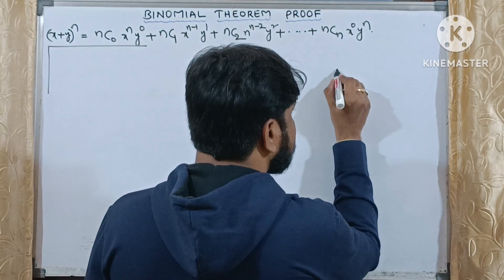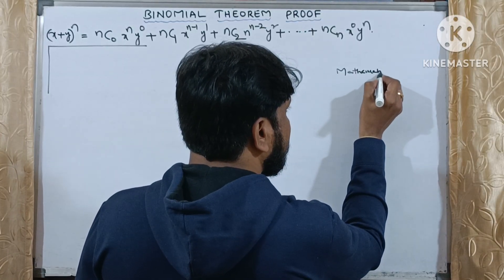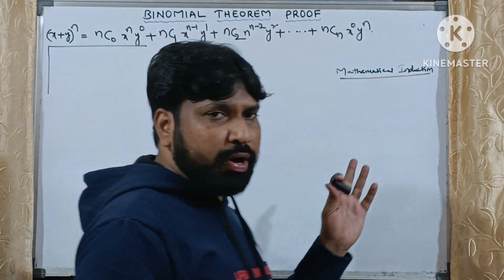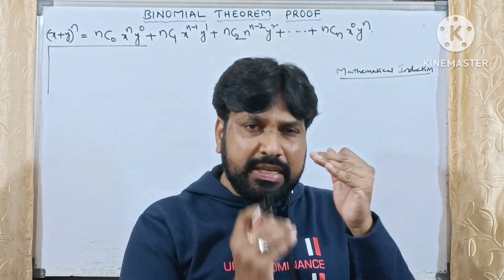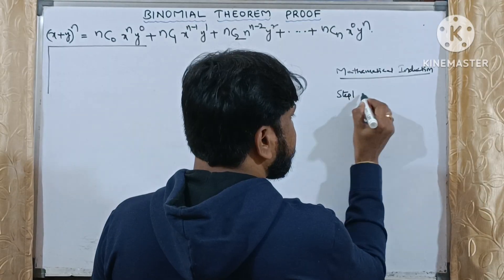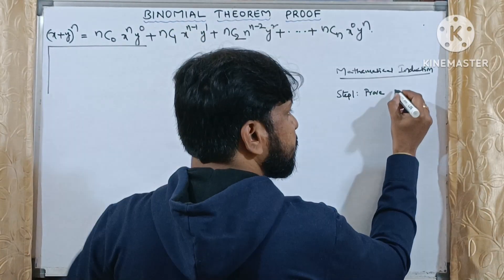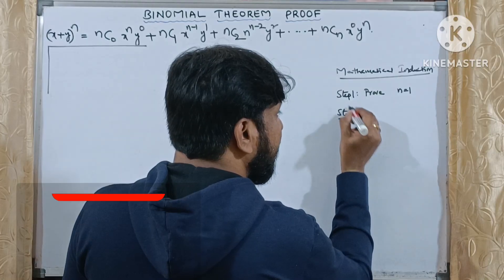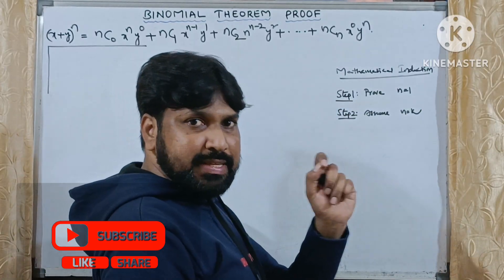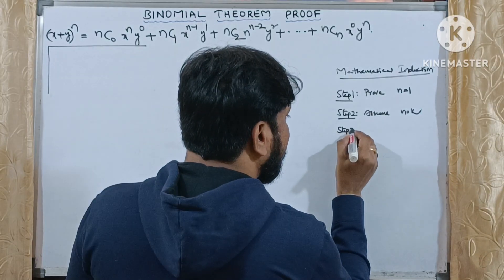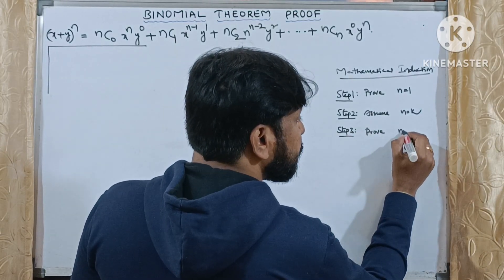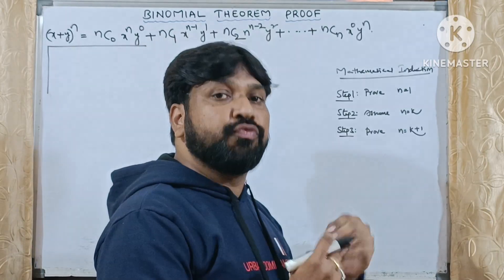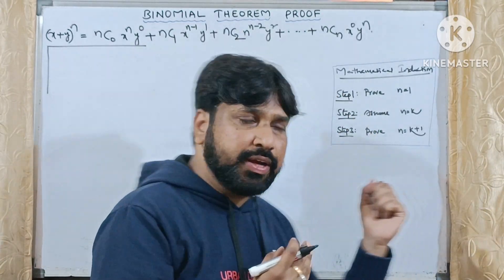What is the rule of mathematical induction? According to induction, we need to solve in three steps. Step one: we need to prove the expansion is true for n = 1. Step two: we assume it is true for n = k. Step three: we need to prove it is true for n = k + 1. Whenever these three steps are derived, we say the expansion is true for all natural numbers.